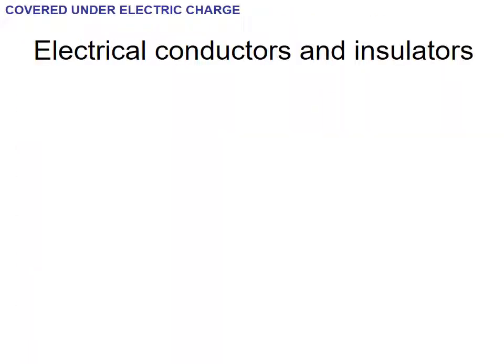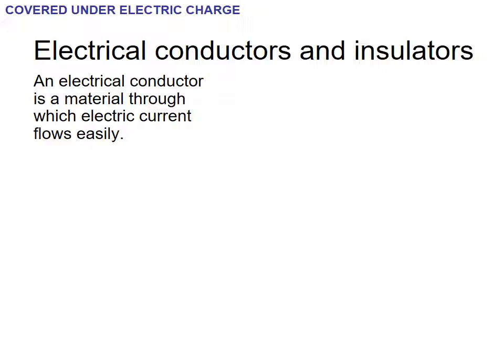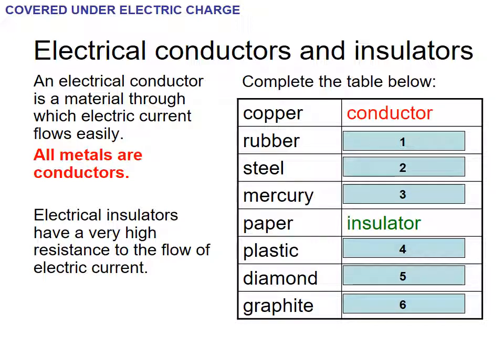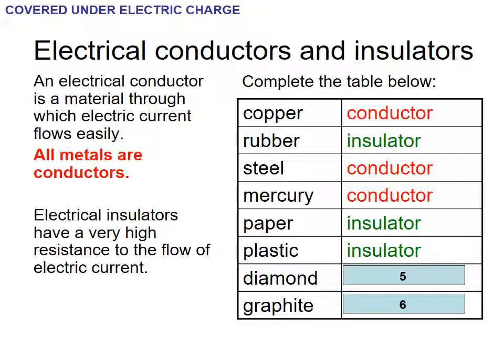Going back and summarising what we did in static electricity around electrical conductors and insulators: a conductor is a material that allows electric current to flow through easily, therefore all metals are conductors — that's why we have copper in our wires. An electrical insulator has a very high resistance to the flow of electrical current. Copper is a great conductor, rubber is an insulator, steel is a conductor, mercury is a conductor, plastic is an insulator, diamond is an insulator, and graphite is a conductor.